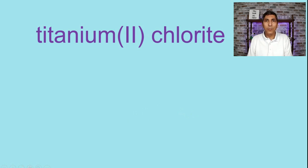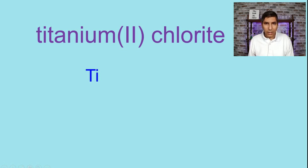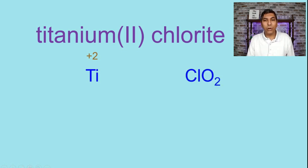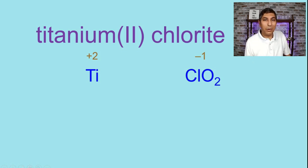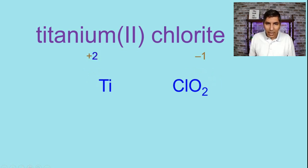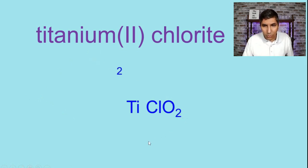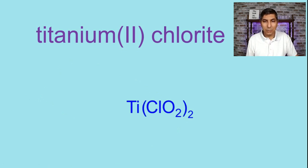Let's try titanium 2 chloride. Titanium has the symbol Ti, and the 2 shows us the charge is positive 2. Chloride is a polyatomic ion with the formula ClO₂ and a charge of negative 1. The charges don't cancel, so we swap them: the 2 becomes the subscript for chloride. And since we're placing a subscript onto a polyatomic ion, we need parentheses. The formula is Ti(ClO₂)₂.